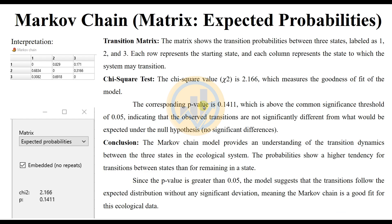The first matrix is for expected probabilities. The transition matrix shows the transition probabilities between three states labeled 1, 2, and 3, where 1 is forest, 2 is grassland, and 3 is wetland. Each row represents the starting state and each column represents the state to which the system makes a transition. The chi-square test value (x²) is 2.166, representing goodness of fit of the model. The corresponding p-value is 0.1411.